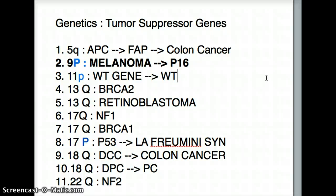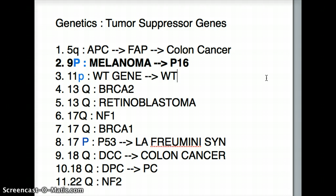That is followed by 11P. Now 11 is also one of the first numbers — think of young children because it's kind of primary. So 11P is going to have the tumor suppressor gene for Wilms tumor. If both loci get knocked off, we're going to have Wilms tumor. So to recap: 5Q is APC causing FAP; 9P causes melanoma affecting the tumor suppressor gene P16; and 11P is Wilms tumor.